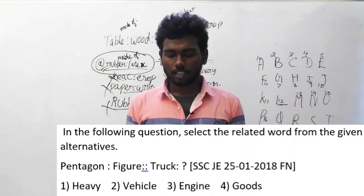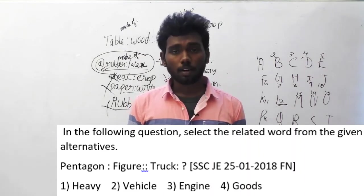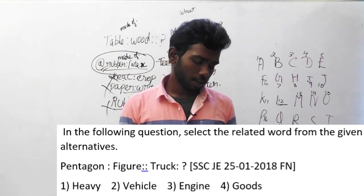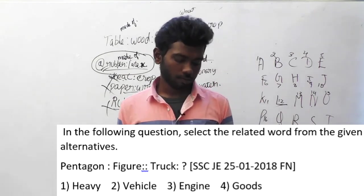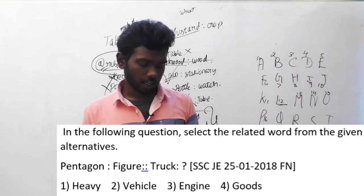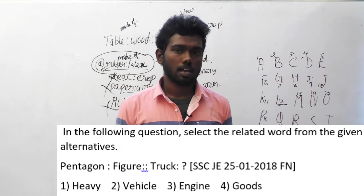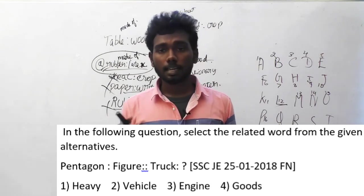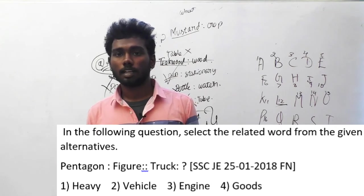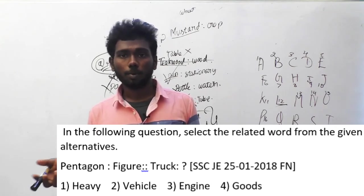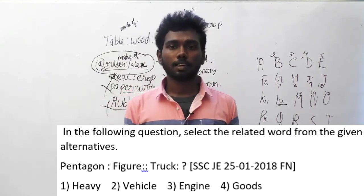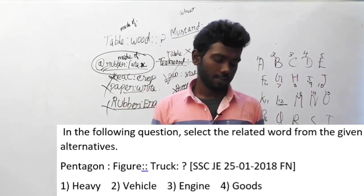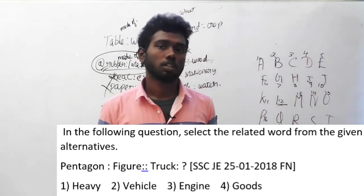Question number 140. In the following question, select the related word from the given alternatives. Pentagon is to figure implies truck is to what? Options are heavy, vehicle, engine, and goods. If you form a sentence: pentagon is a figure. Then what is a truck? A truck is obviously a vehicle. So option B, vehicle, is the answer.